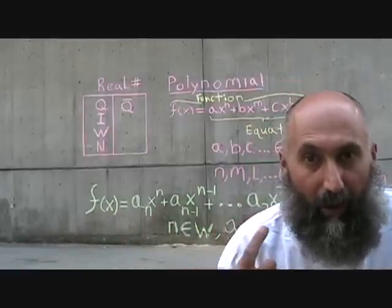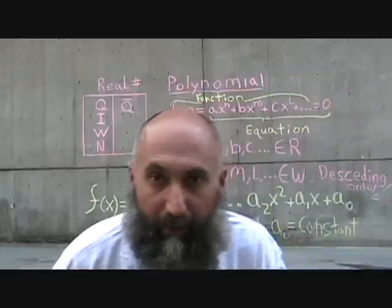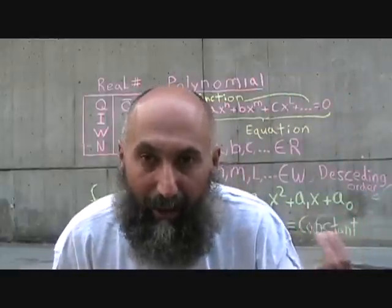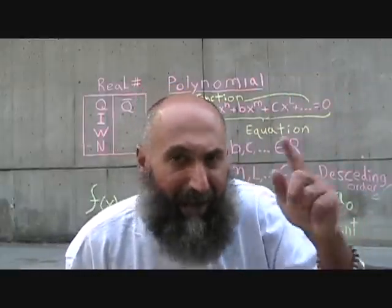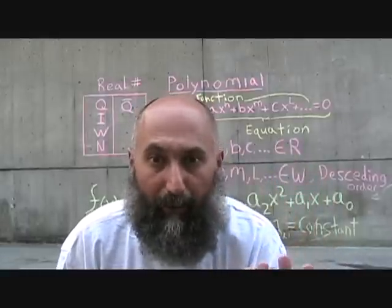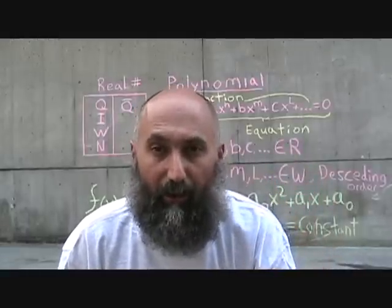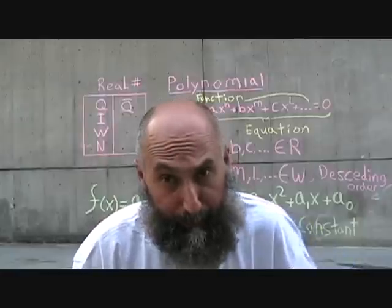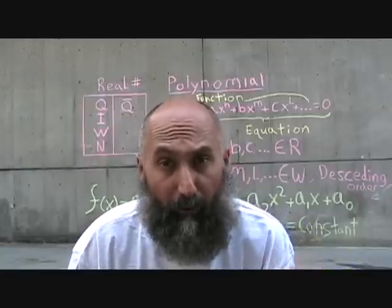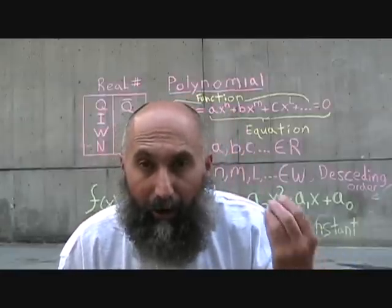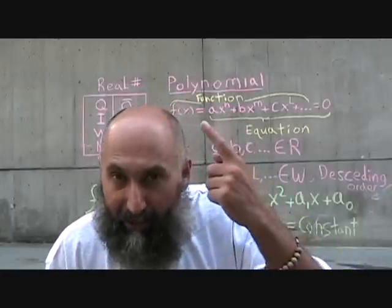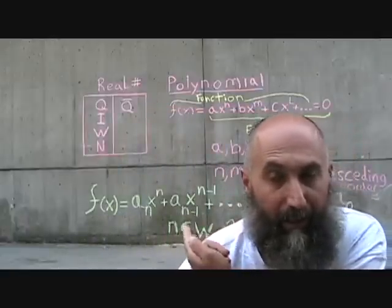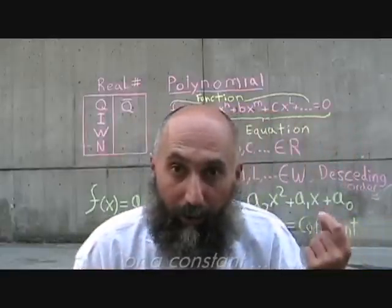This toggles all the way down — you could have just a constant, a constant number. If you had f of x equal to a number, even zero, that's considered to be a polynomial function. So polynomial functions are anything that has a combination of these terms, or even just a zero.